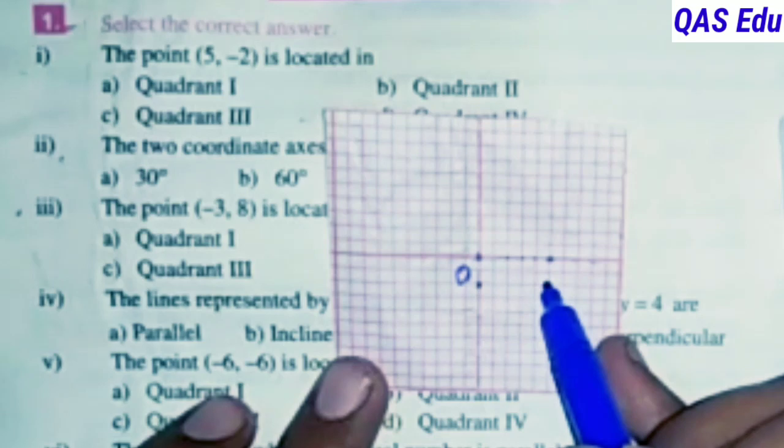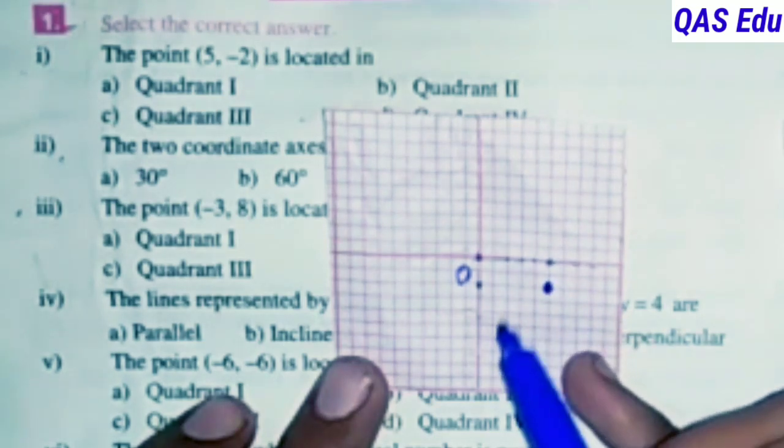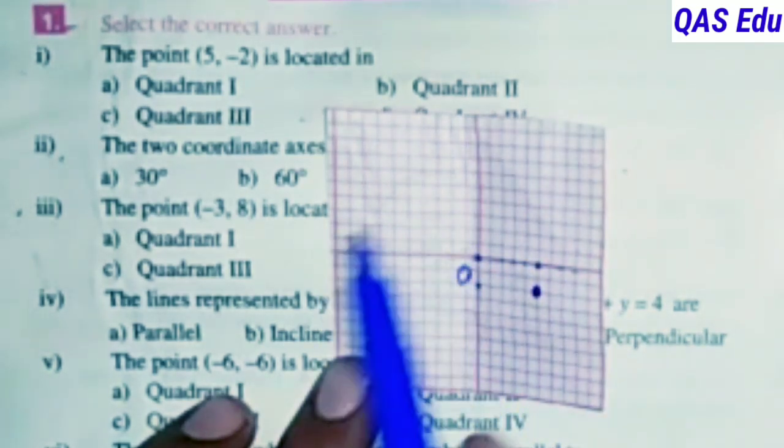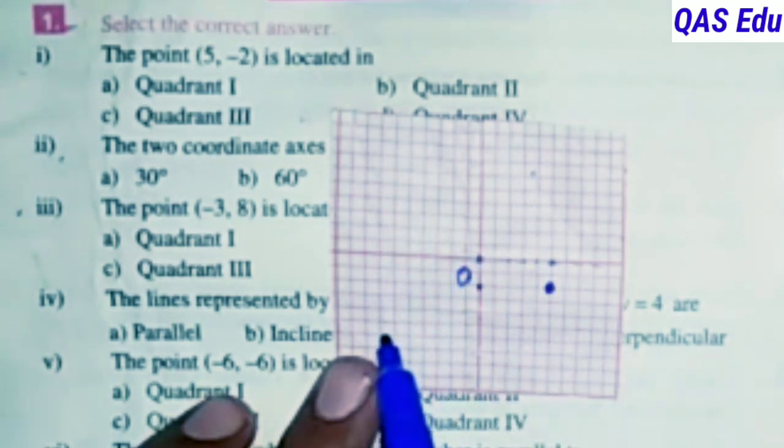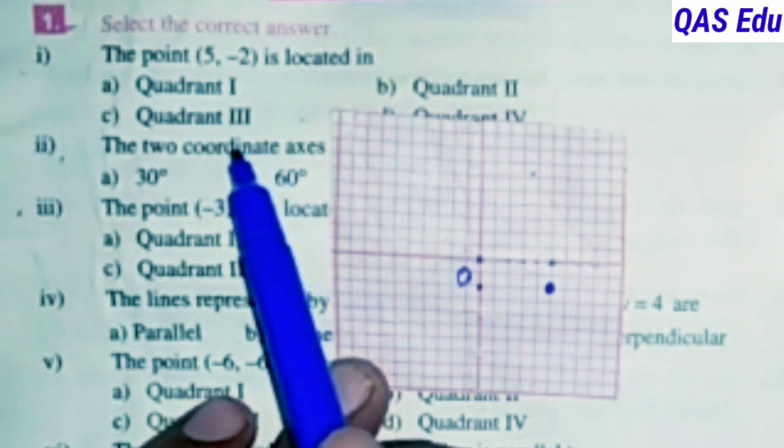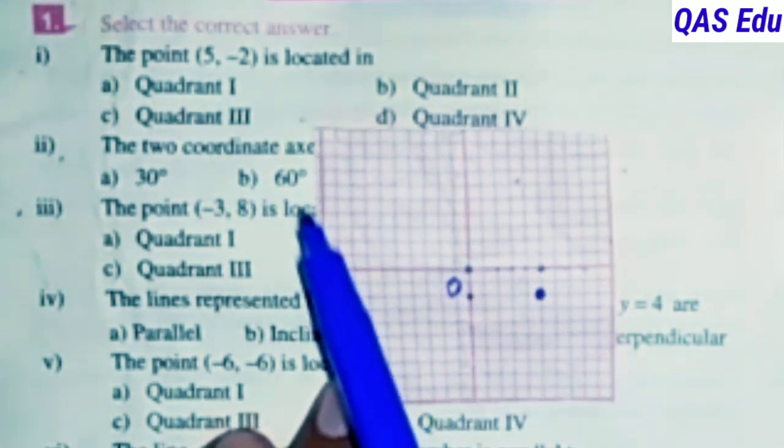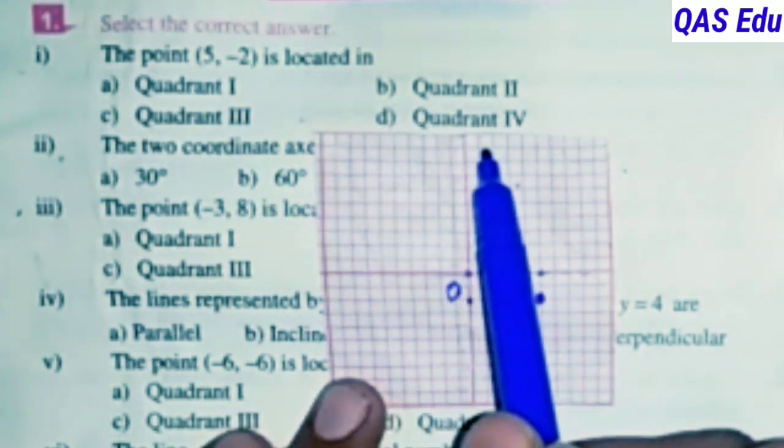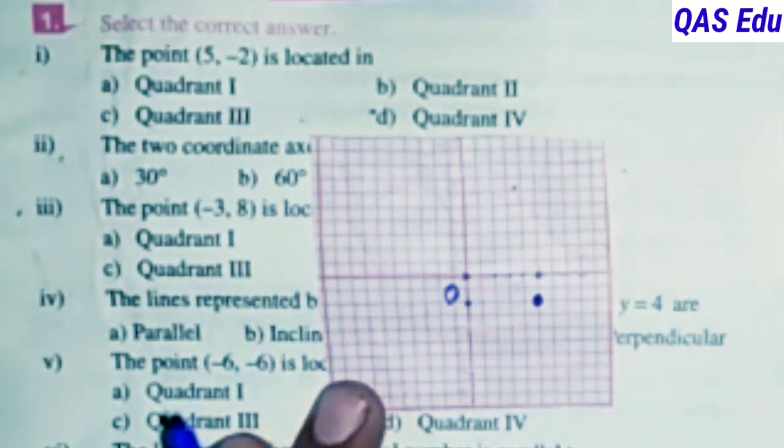The point is at 5 along x-axis and -2 along y-axis. So (5, -2) lies in or is located in quadrant number 4. The correct option is D.